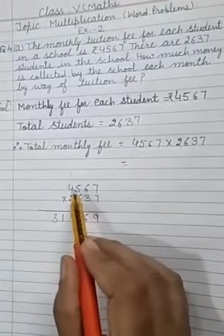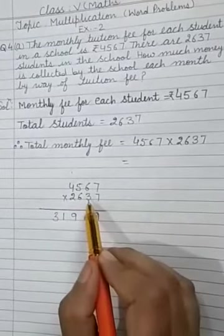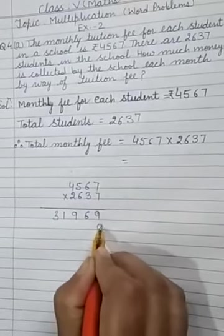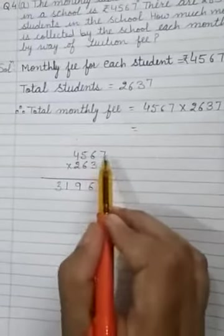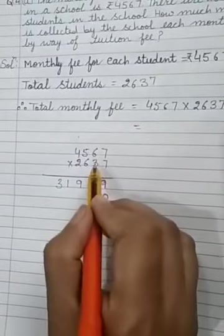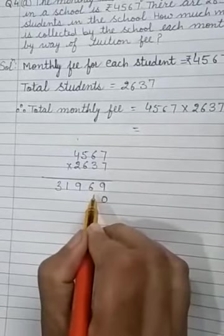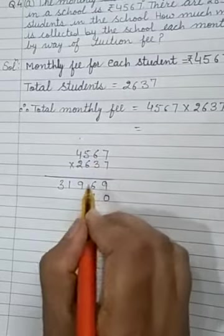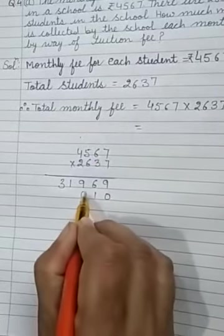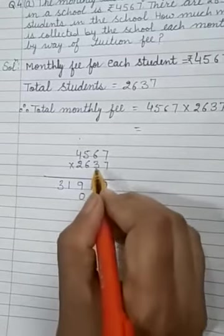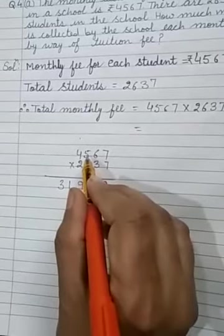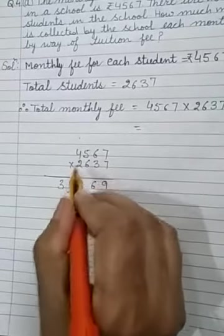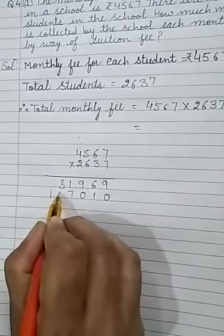Now, we have to multiply this number by 3. Now, 3 is at tens place. So we will write here 1 zero. Now we will multiply this number by 3. 3 times 7 is 21, 2 carry. 3 times 6 is 18, 18 plus 2 is 20. We will write 0, 2 carry. 3 times 5 is 15, 15 plus 2 is 17, 1 carry. 3 times 4 is 12, 12 plus 1 is 13.